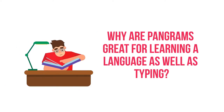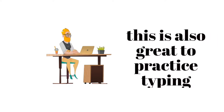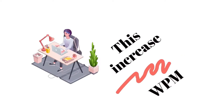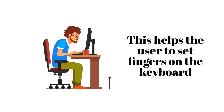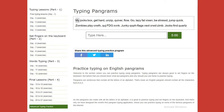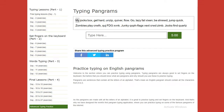Why are pangrams great for learning a language as well as typing? Pangrams contain all the letters of an alphabet, making them useful for children to practice writing and improve handwriting. Similarly, they are also good for typing practice. To practice touch typing, you need to use all 10 fingers, and since pangrams contain all the letters, they are great for beginners. This helps the user set their fingers on the keyboard. We have designed a unique typing test application that uses only pangrams as its source document, making typing practice more interesting and functional. Use this pangram typing practice and test app to set your fingers on the keyboard.